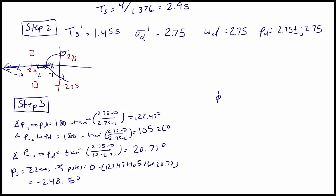PS is equal to -248.5 degrees. The phase deficiency is equal to 180 + PS, or 180 - 248.5, which is -68.5 degrees. So we need to design the PD controller to supply 68.5 degrees.